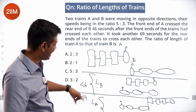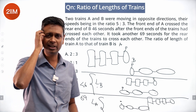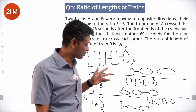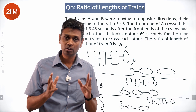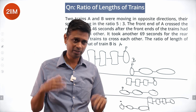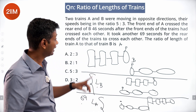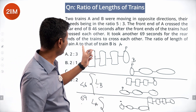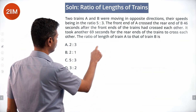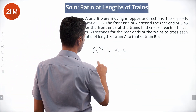So we want LA to LB. The ratio is 69 to 46 — since the relative speeds are the same (they are going in opposite directions), the ratio of distances equals the ratio of times. Longer distance takes longer time: this took 69 seconds, and this took only 46. So the length of train A to the length of train B is 69 to 46, which is 3 is to 2.